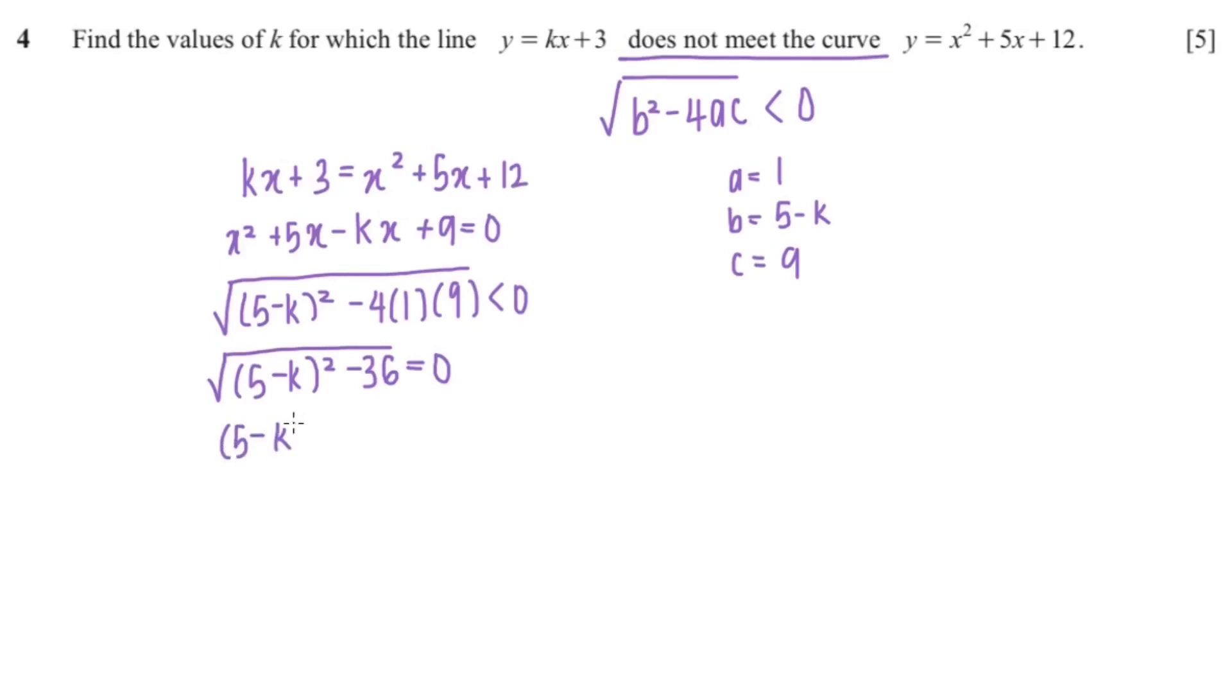So now I'm going to square both sides, so that would be 5 minus k squared minus 36 equals 0.